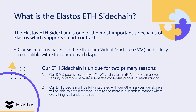Our Ethereum sidechain is unique for two primary reasons. Our DPoS pool is elected by a POW chain token, ELA, from our main chain. This is a massive security advantage because the separate consensus process controls minting. This is in contrast to other DPoS blockchains where if an attacker were to gain partial control of the consensus, they may be able to mint extra tokens and vote for themselves, solidifying their control. With Elastos, because we use hybrid POW merged with Bitcoin, this is extremely difficult because the attacker would also have to attack the Bitcoin blockchain to successfully mint and grant themselves more votes.